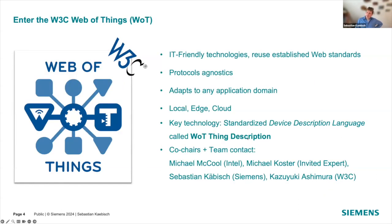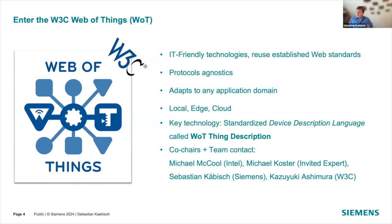This is where the Web of Things comes into the game to change this situation. The idea is that Web of Things defines technology building blocks that are IT-friendly and use existing web standards. The web is very successful at creating applications easily and orchestrating services, and the goal is to bring similar paradigms to the IoT world. Importantly, we are protocol-agnostic — we don't prescribe which protocol to use.